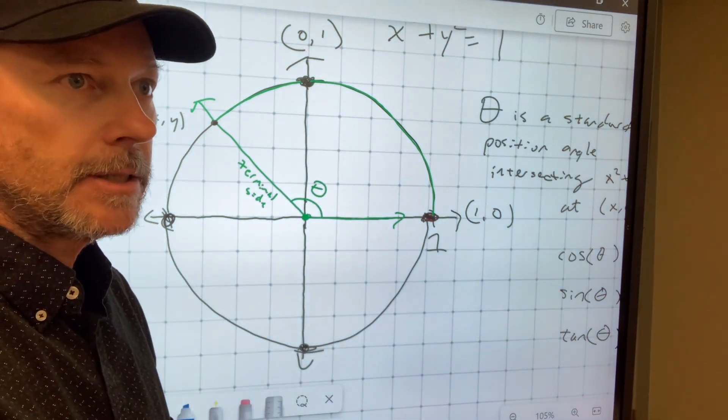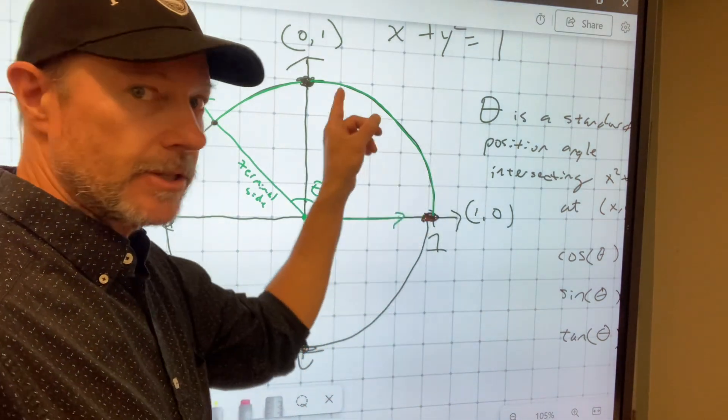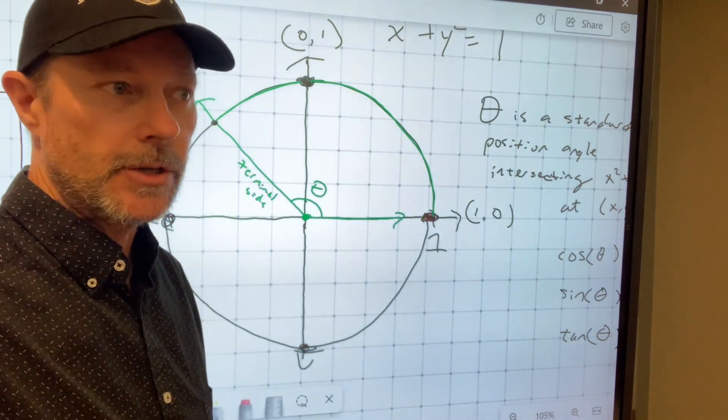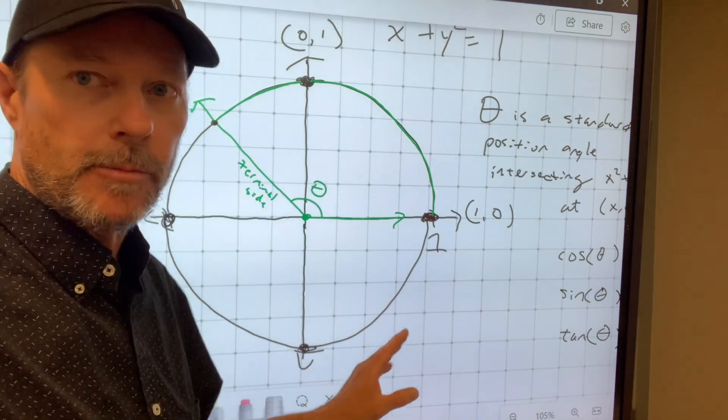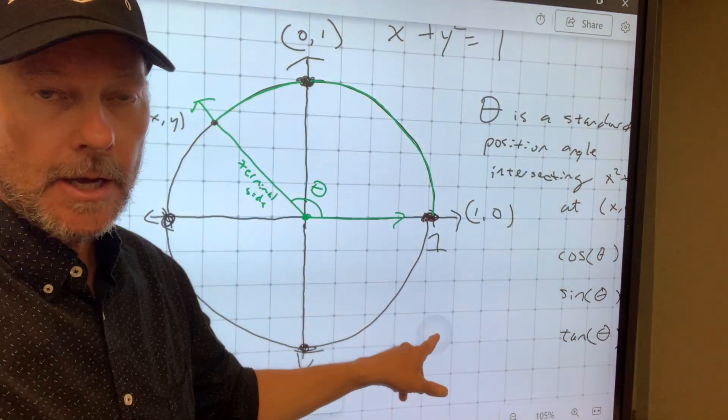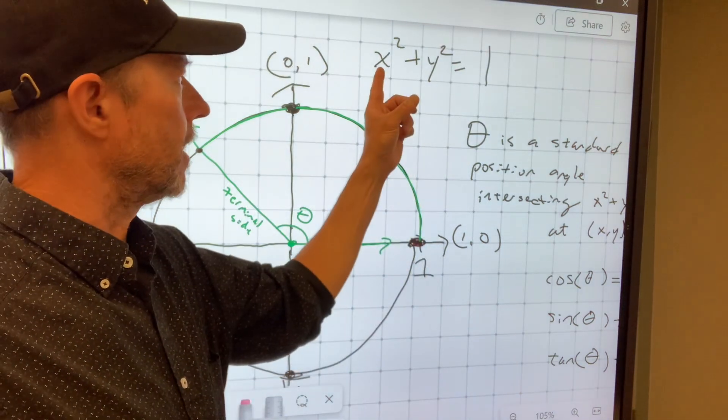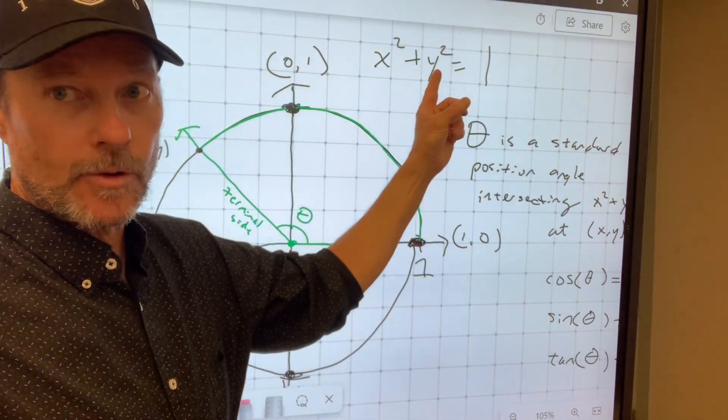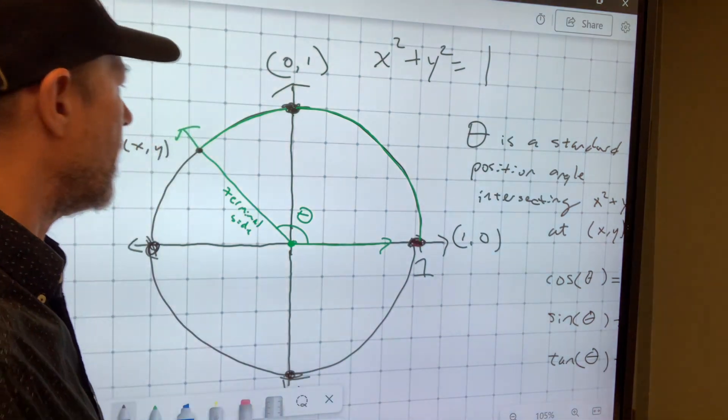And in other lessons and other videos, we found some other points on the unit circle. There's an infinite number of points on the unit circle, of course. And they all have the trait that if you square the x-coordinate and add it to the square of the y-coordinate, you always get one.